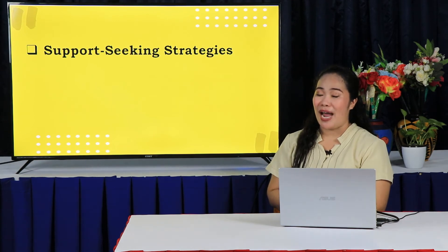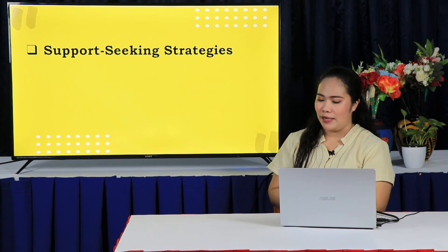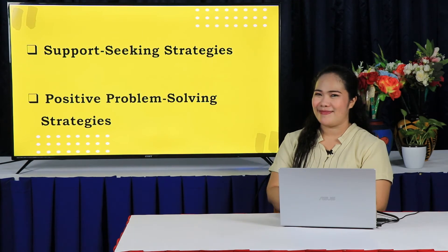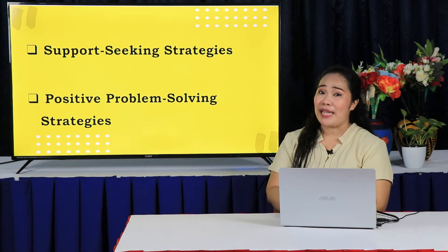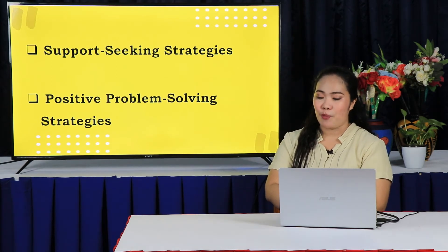There are two coping strategies that adolescents may apply. The first is support-seeking strategies: talking to a friend, seeking advice from a responsible family member or relative, talking to someone to find out more about the problem, looking for someone who will sympathize with you, or seeking professional help. The second is positive problem-solving strategies: do not act hastily, make a plan of action, look at the problem as a challenge, be creative in solving the problem, and come up with different solutions.